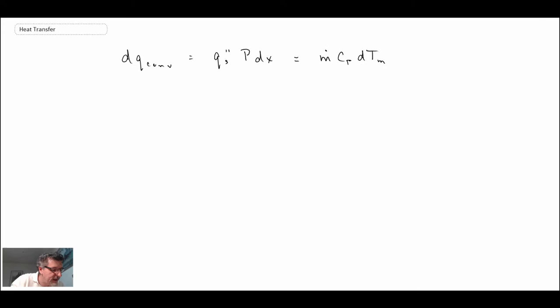beginning by rearranging. What I've done here is I've taken these two and done a little bit of rearranging. We end up with a differential equation that gives us an expression for how the bulk or mean temperature is changing as a function of position within the pipe.